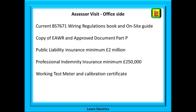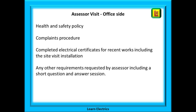The assessor will also need to see your public liability and professional indemnity insurance certificates, and you must have a working test meter with a current calibration certificate. You will need a health and safety policy in place and a complaints procedure in place. Something very simple will suffice — samples of these documents can be found with a quick Google image search. Nothing complicated — find one that suits your business, copy it, and insert your name where needed.